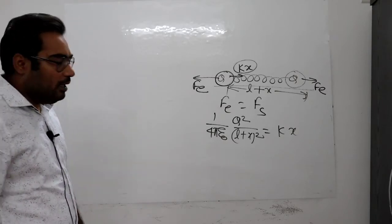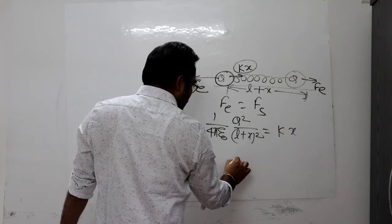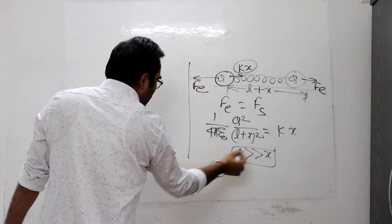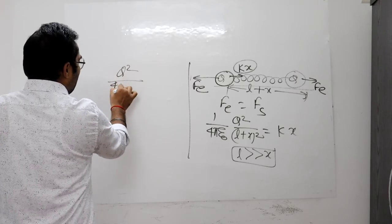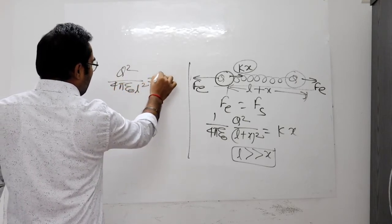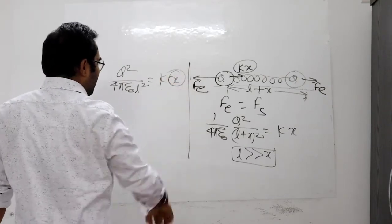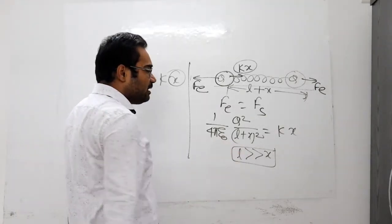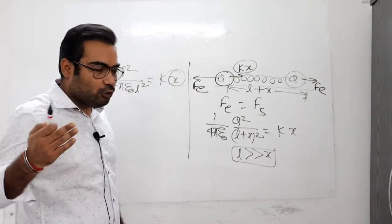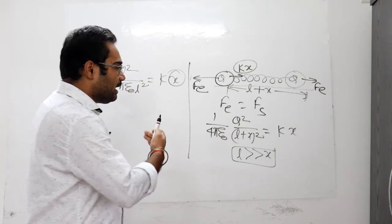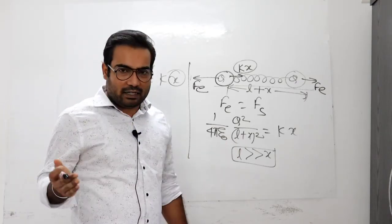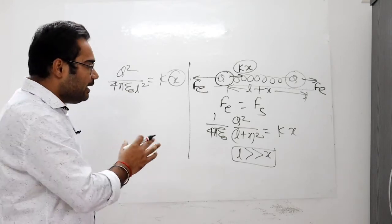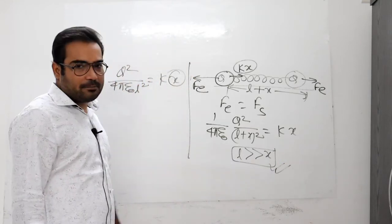Now it is interesting. If you take L plus X without approximation, the calculation becomes very difficult. When you solve for X, you'll get 2 to 3 values, and selecting the physically meaningful one becomes tough. In this question, it's stated that L is much larger than X, so we can use this approximation to simplify the calculation.